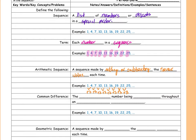The common difference is the constant number being added or subtracted throughout an arithmetic sequence. Using the same example, what am I doing every time? I am adding three. Adding three every time — so that's my common difference.